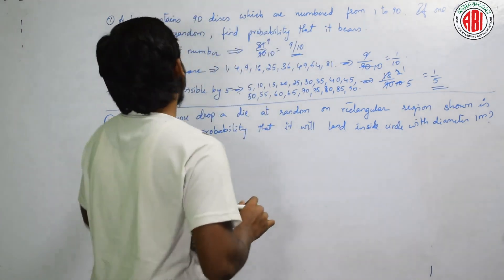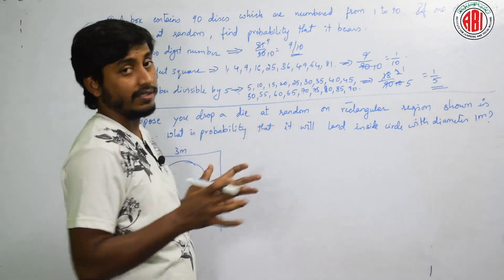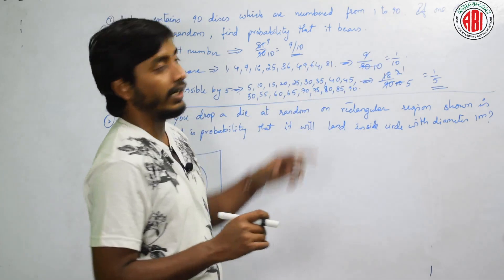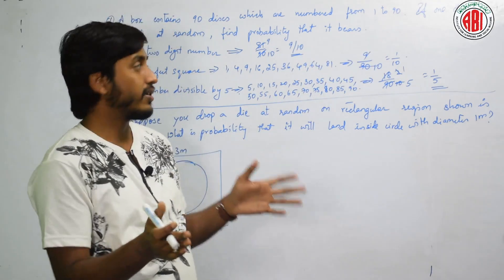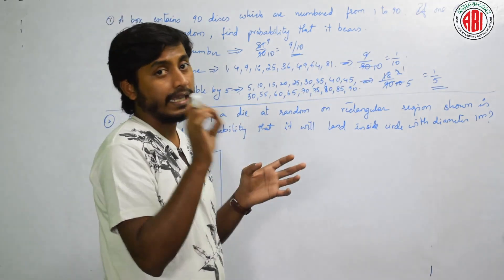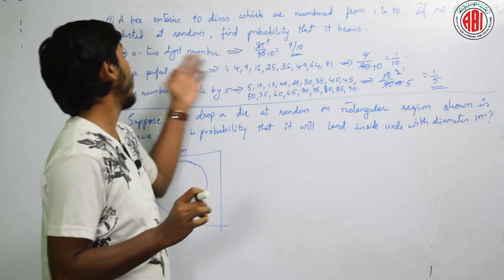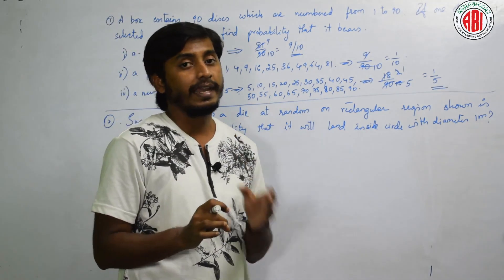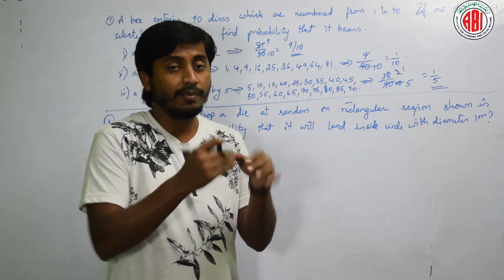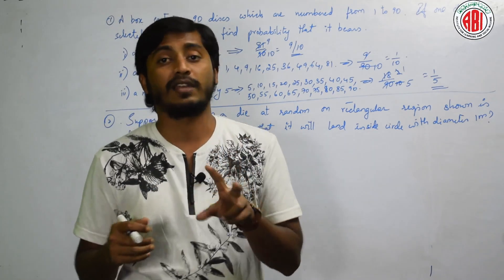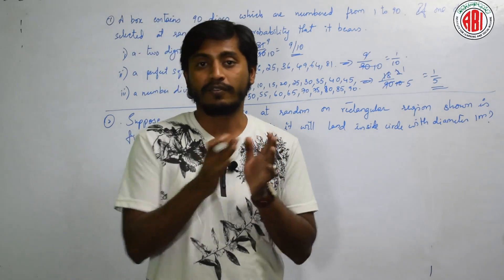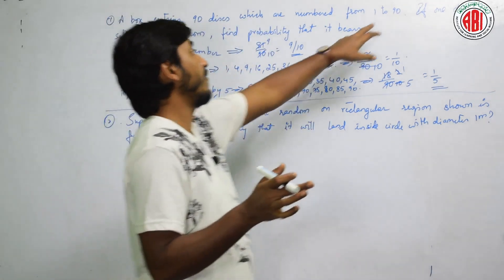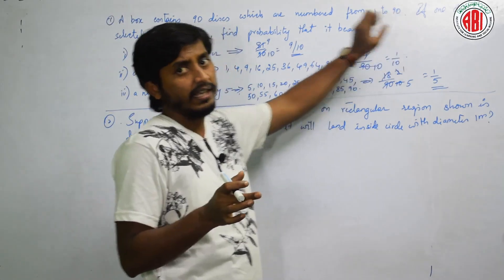Once again, let me tell you. He is telling that there is a box in which there are 90 disks. Each disk is numbered from 1 to 90. Out of those 90 disks, he is telling us to select a particular disk such that the probability is a 2 digit number. 2 digit number means it starts from 10. Till 9 it is a single digit number. After 9 that is 10, 1, 0, there are 2 digits.